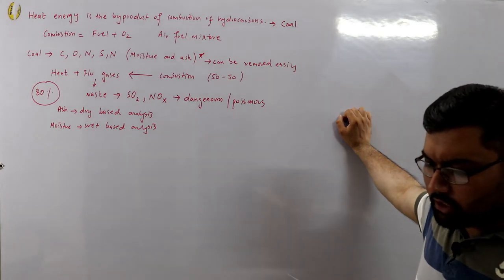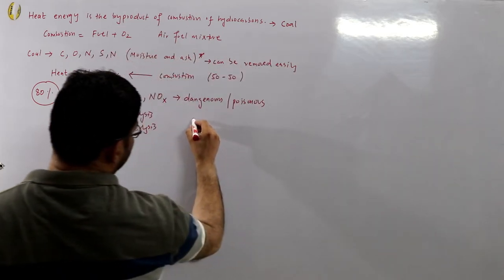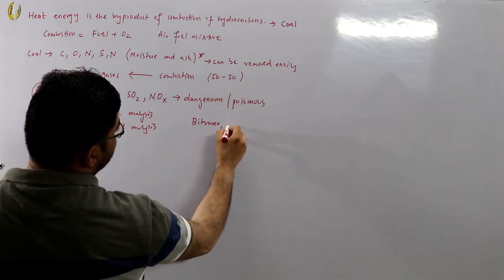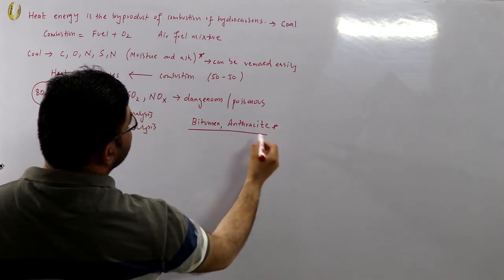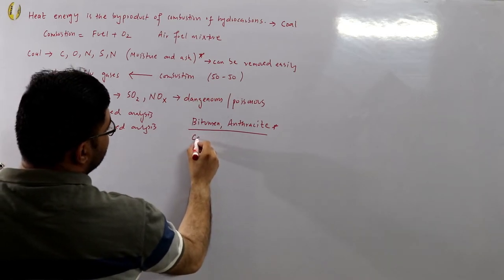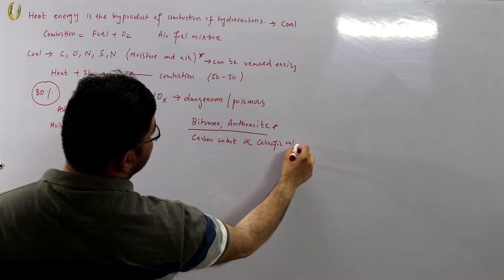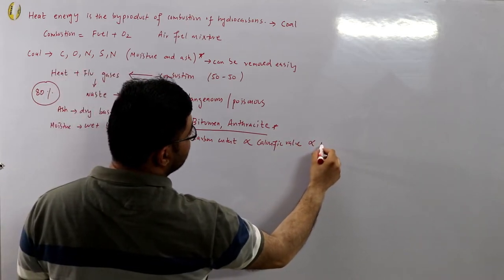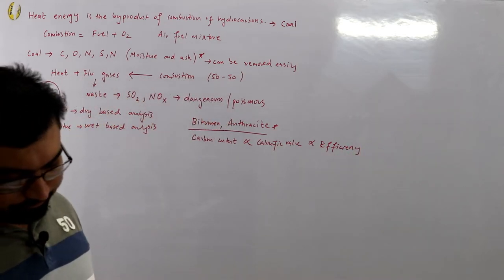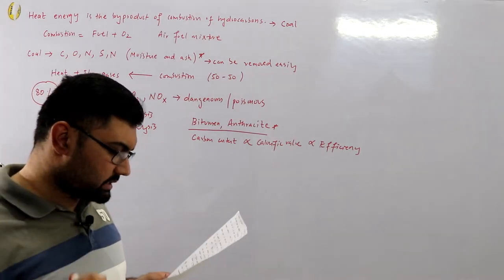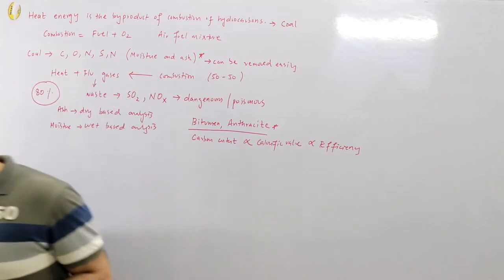Bituminous coal and anthracite are the types of coal used in thermal power stations because of their high carbon content. We'll discuss calorific value in the next video, but these have high calorific values. The higher the carbon content, the higher the calorific value — also called the high heating value — and the higher the calorific value, the higher the efficiency of the system. Coal must have greater than 80% carbon composition to be used in thermal power plants.